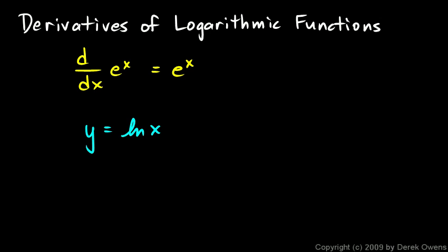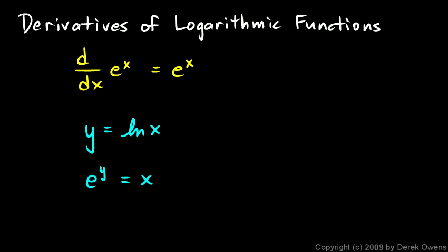We're going to differentiate this with implicit differentiation. I'll start by rearranging the equation to say e to the y is equal to x — this is the same equation just written in exponential form instead of logarithmic form. To get there, take the equation and do e to the left side and e to the right side, so e to the y equals e to the power of the natural log of x.